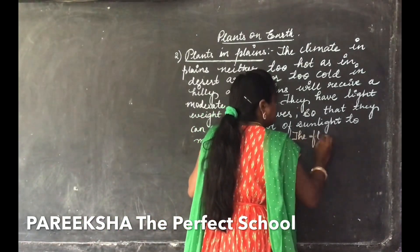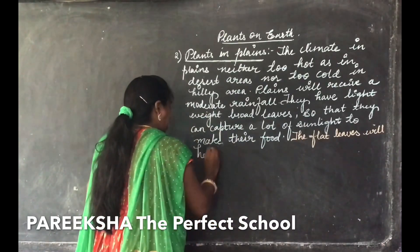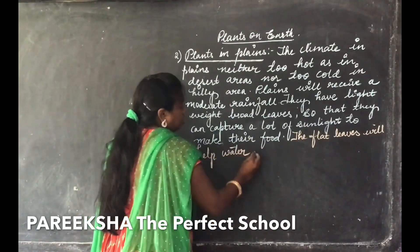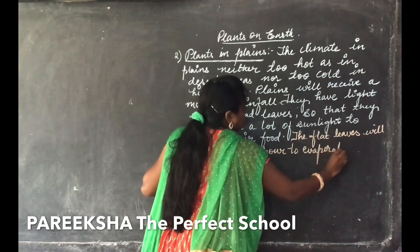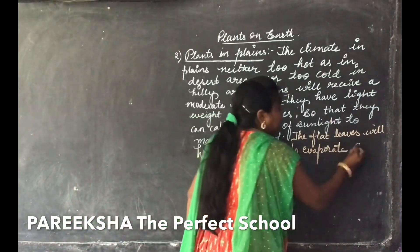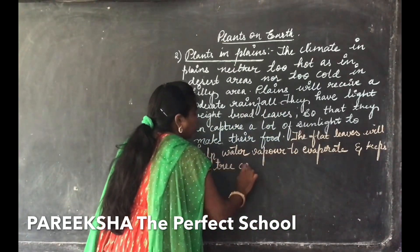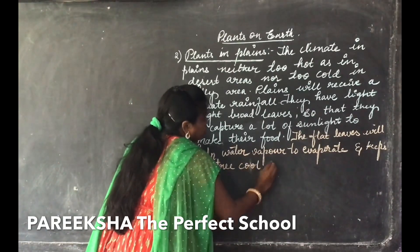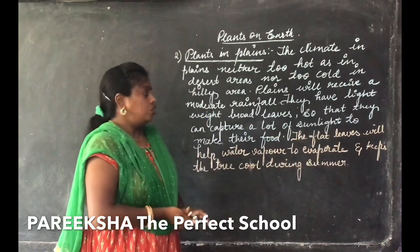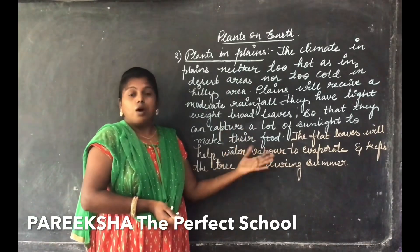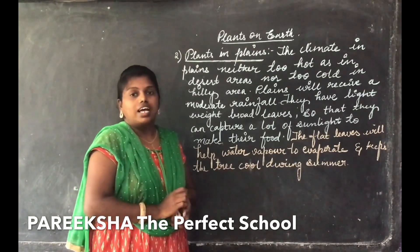Whereas coming to the flat leaves — what is the use of flat leaves? The flat leaves help water vapor to evaporate. These plant leaves help water vapor to evaporate, and this keeps the tree cool during the summer season.